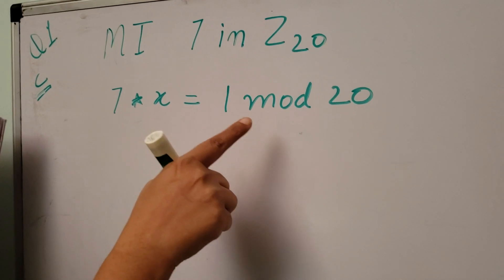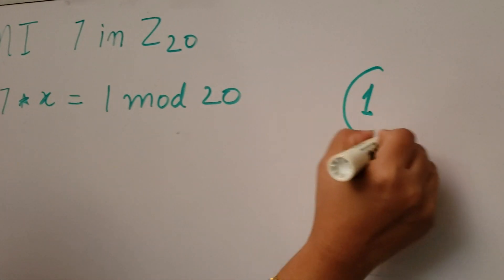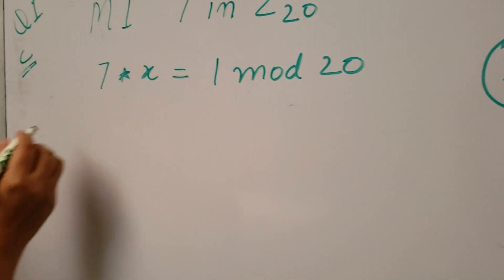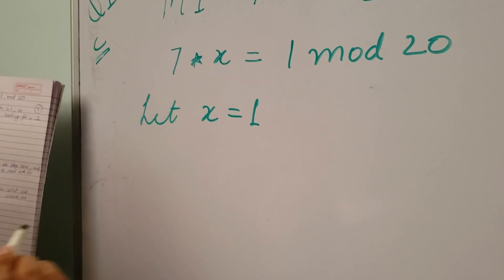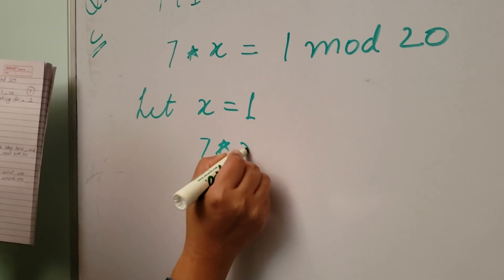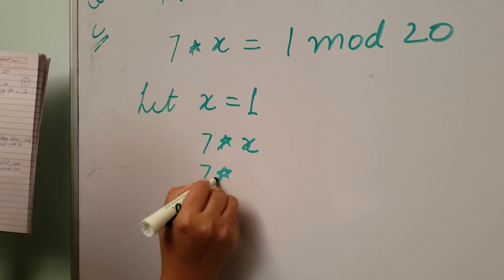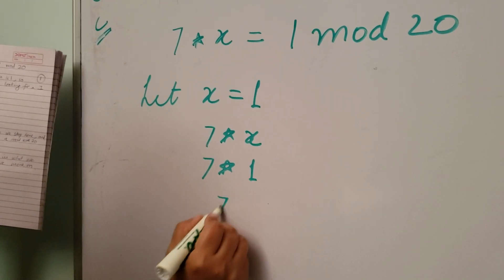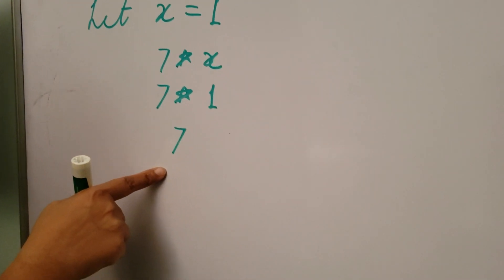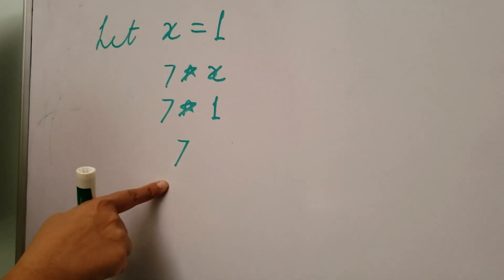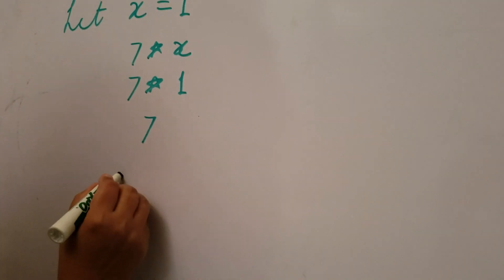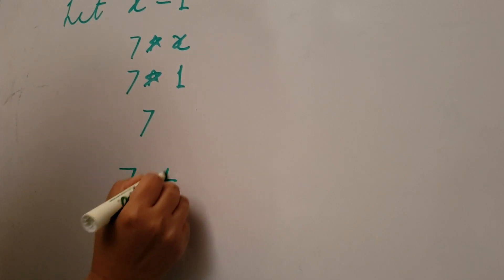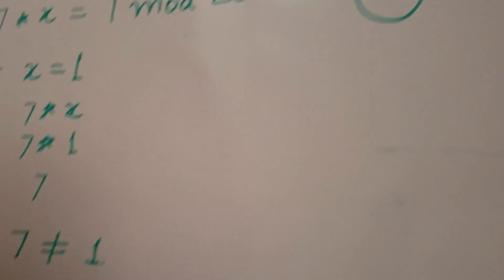Let's take x equal to 1. 7 times x is 7 times 1 which is 7. So 7 is less than 20, so we stop here and there is no need to take a mod with 20. And 7 is not equal to 1, and 1 is what we are looking for, so we move on.